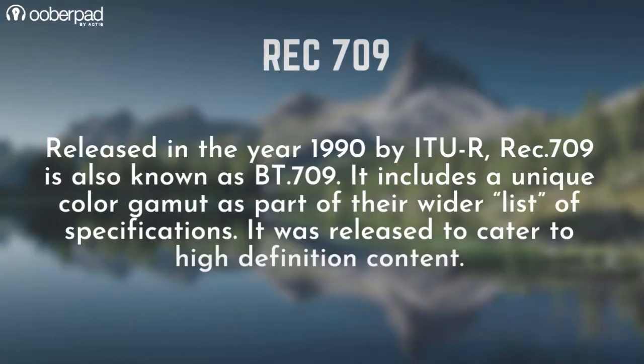Released in the year 1990 by ITU-R, REC-709 is also known as BT-709. It includes a unique color gamut as part of its wide list of specifications, and it was released to cater to high-definition content.